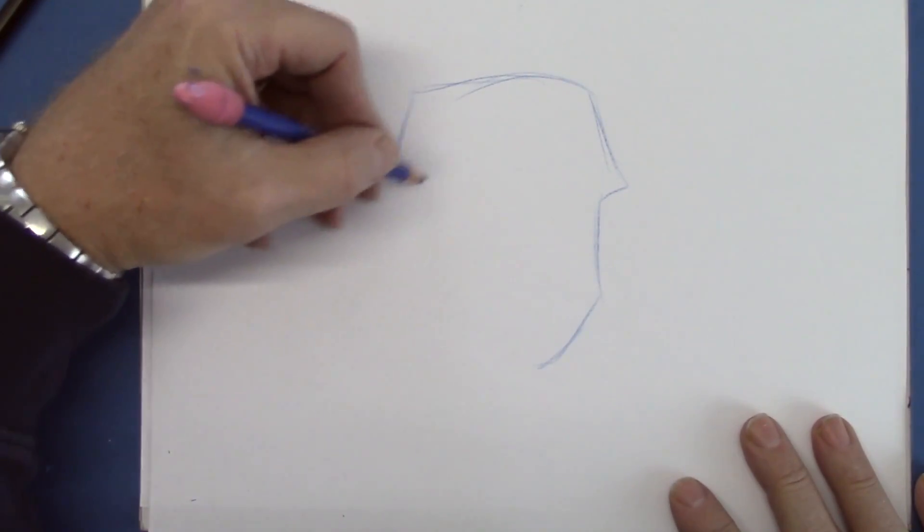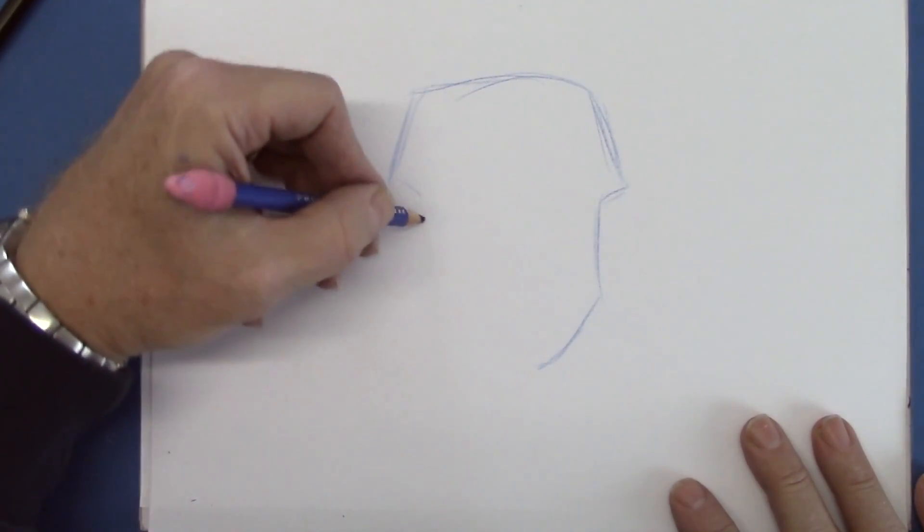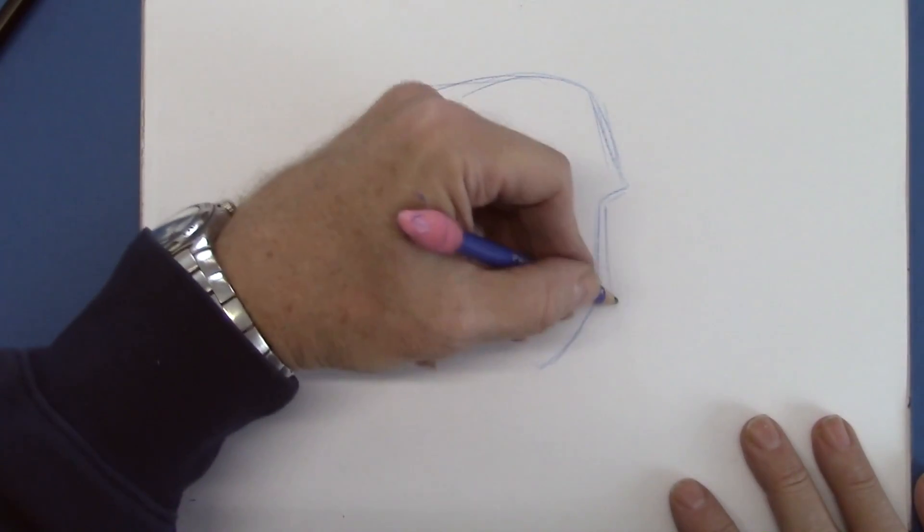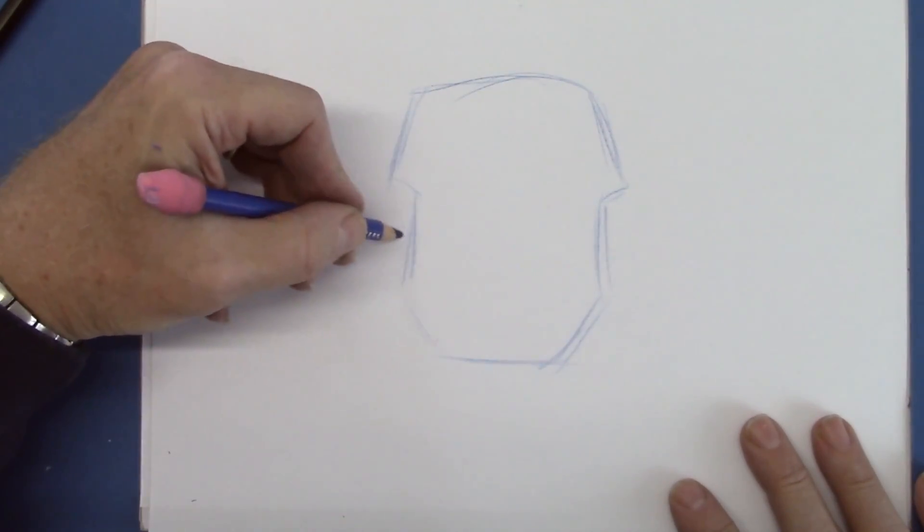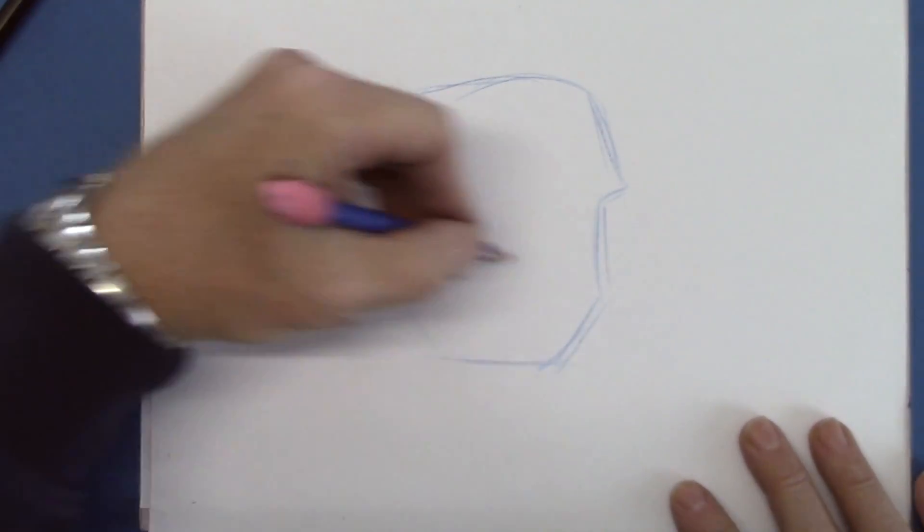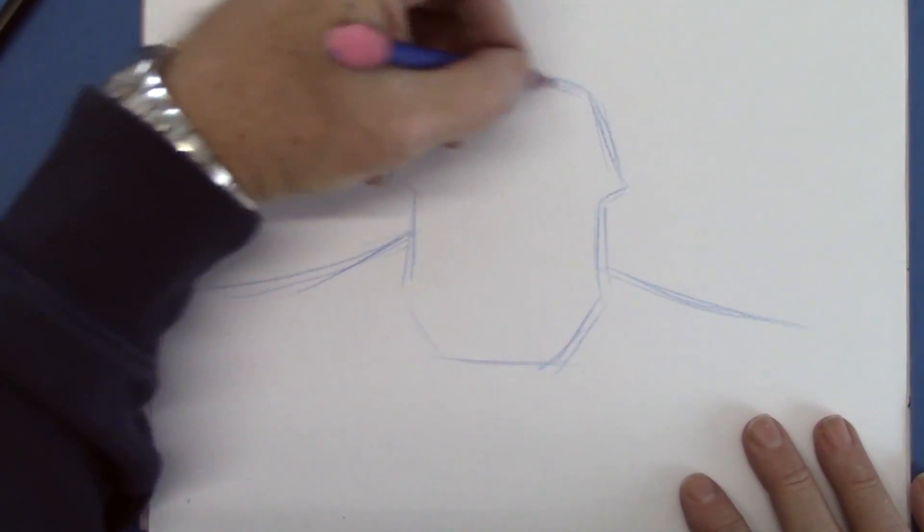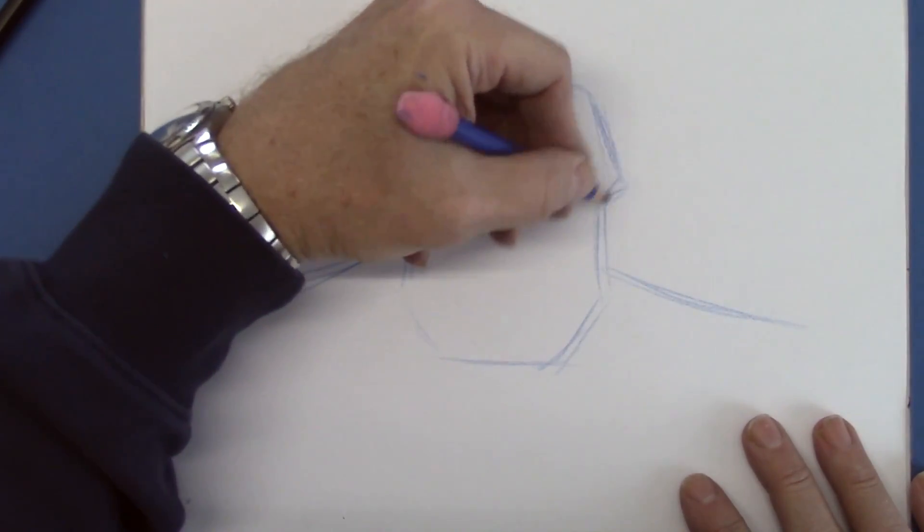So let's just do this in blue pencil first and then we'll go over it once we have the position in black. Let's give him his big impressive shoulders. I mean he's going to be a really powerful bad guy.